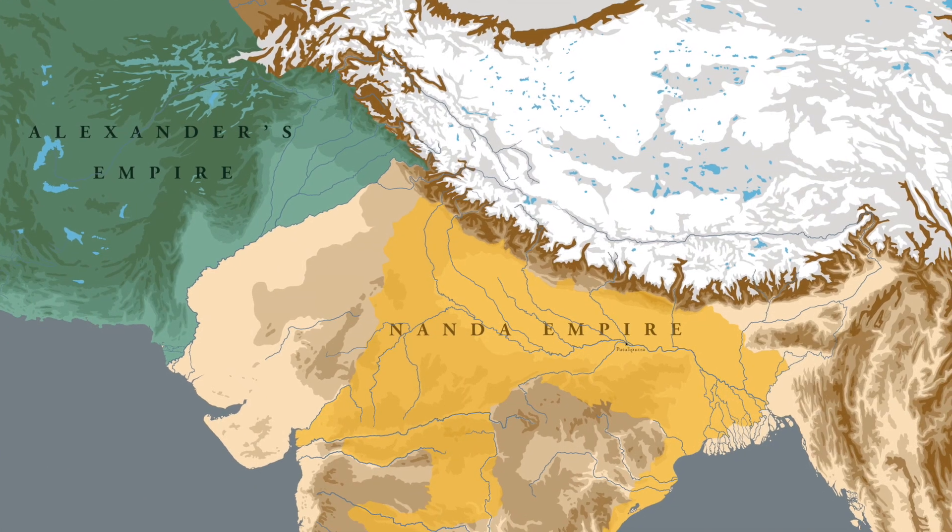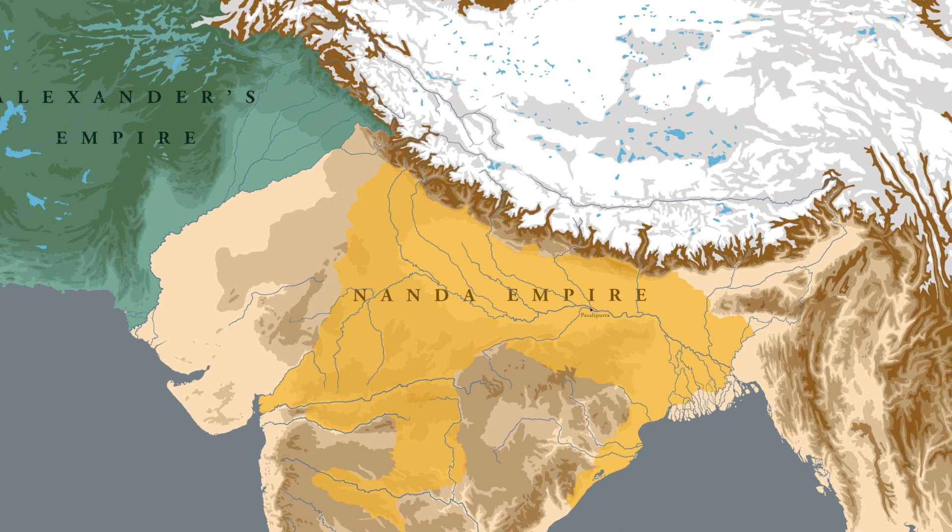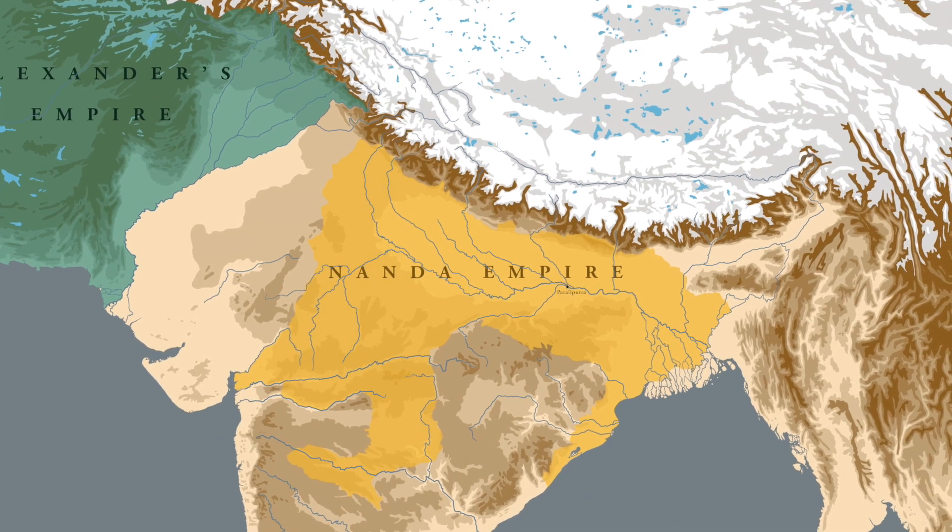The reason why Chandragupta visited the Greek camp was that he wanted Alexander to invade the Nanda territory. He argued with Alexander that if he invaded the Nanda territory, the people of the Nanda empire would welcome him as a liberator. But that didn't go well with Alexander. Alexander was so offended by the boldness and the way Chandragupta spoke that he ordered Chandragupta should be put to death. But that didn't happen because Chandragupta was able to successfully flee from the Greek camp.